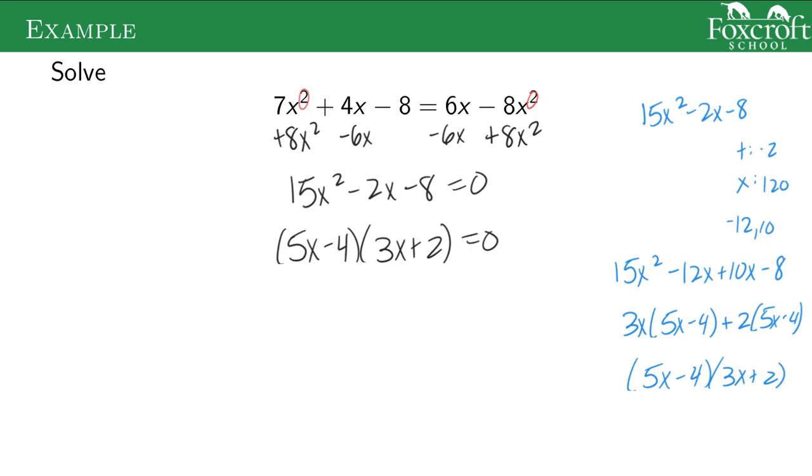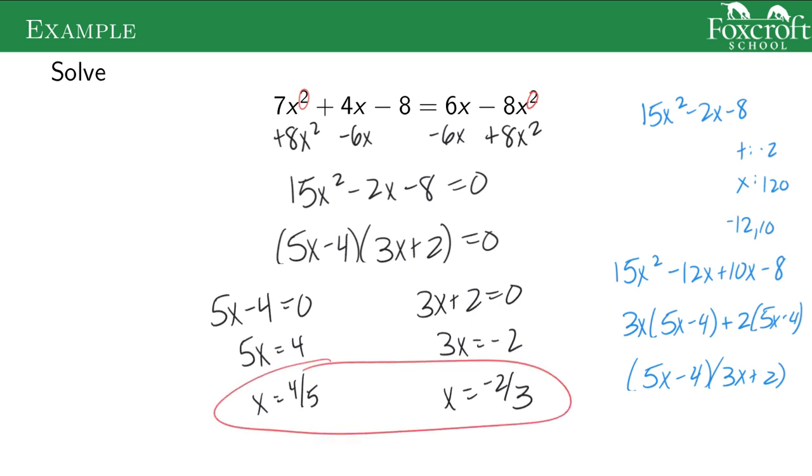Now I can use the 0 product property of separating this out into two smaller equations because they're equal to 0. I add 4 to both sides, divide by 5. Now I subtract 2 from both sides, divide by 3. We get these two answers most of the time for quadratics, not all the time, but a lot of times you get two answers to your quadratic expression.